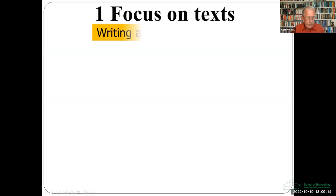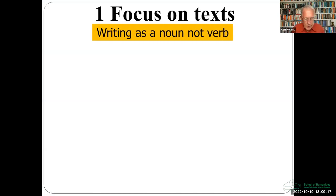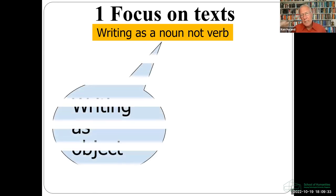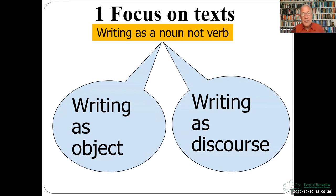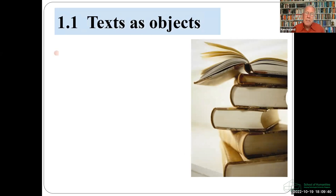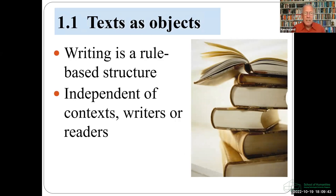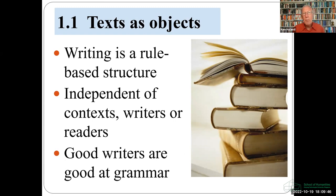First of all, we have text-oriented approaches. These see writing as an outcome — the words on a page or on a screen. So this is writing as a noun rather than as a verb. There are two broad approaches to looking at text, because we can either see them as objects or as discourse. Seeing text as objects means understanding writing as the application of rules. So writing is a thing independent of any writers, readers or context. And learning to become a good writer is largely a matter of knowing grammar. This is what we tend to think of as a product approach.